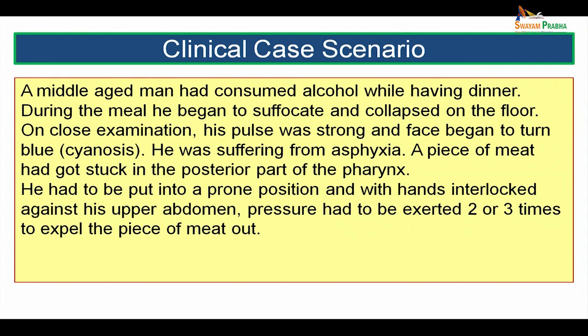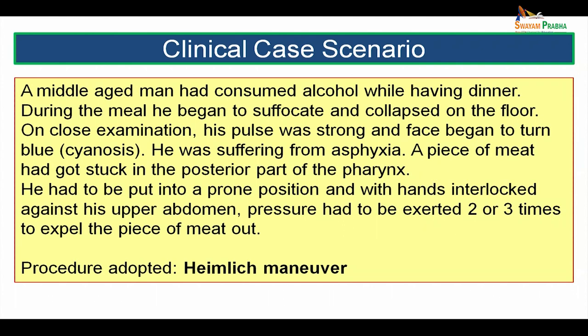A middle-aged man had consumed alcohol while having dinner and during the meal he began to suffocate and collapsed on the floor. On close examination his pulse was found to be strong and his face began to turn blue — that is, he was having cyanosis. He was suffering from asphyxia. A piece of meat had got stuck in the posterior part of the pharynx. He had to be put into a prone position and with hands interlocked against his upper abdomen, pressure had to be exerted on the abdomen two to three times to expel the piece of meat out. The procedure which was adopted is called the Heimlich Manoeuvre.